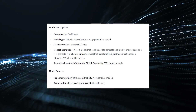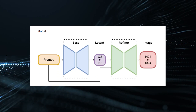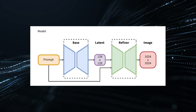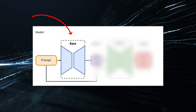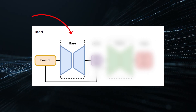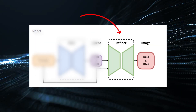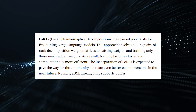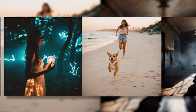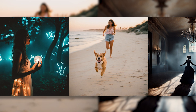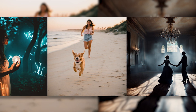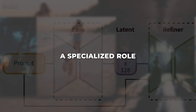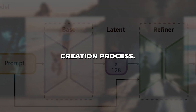Another major change with SDXL is the introduction of a multi-model pipeline. The original SD was a single model, but now there are three separate models working together: the base XL model that handles text-to-image generation, the refiner model that enhances image details, and LoRa that tweaks colors and lighting. This three-stage pipeline allows SDXL to achieve much higher quality images that look incredibly realistic, with each model playing a specialized role in the image creation process.